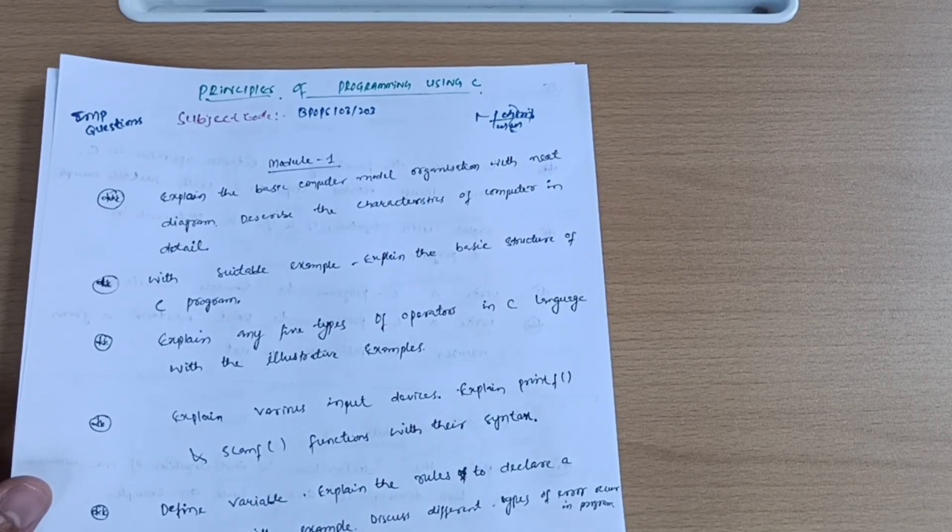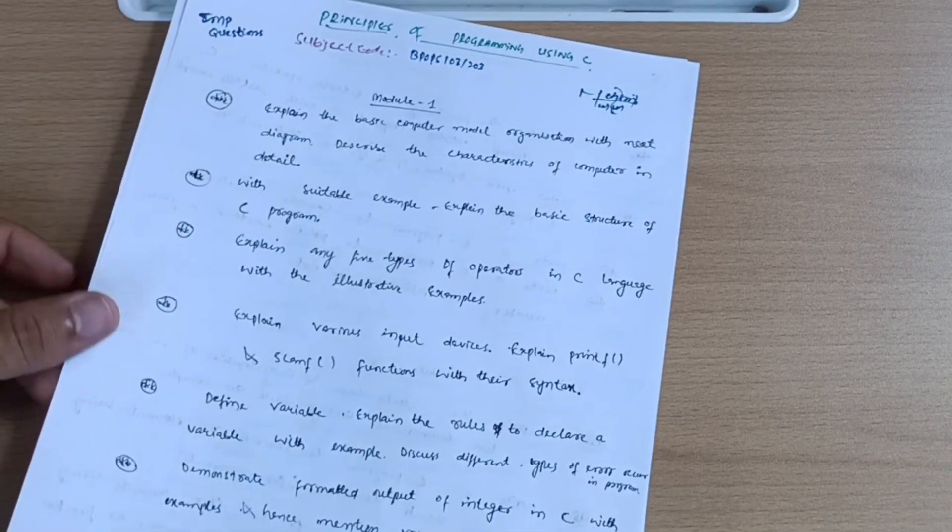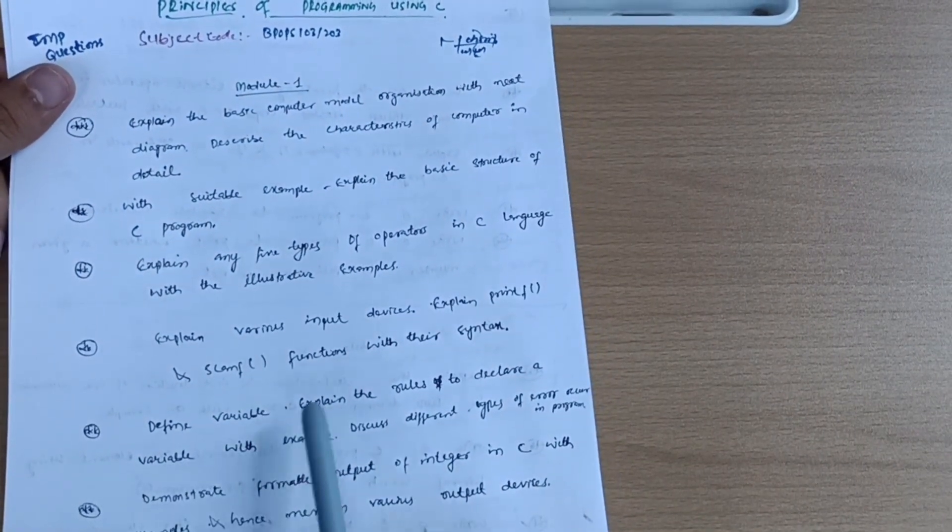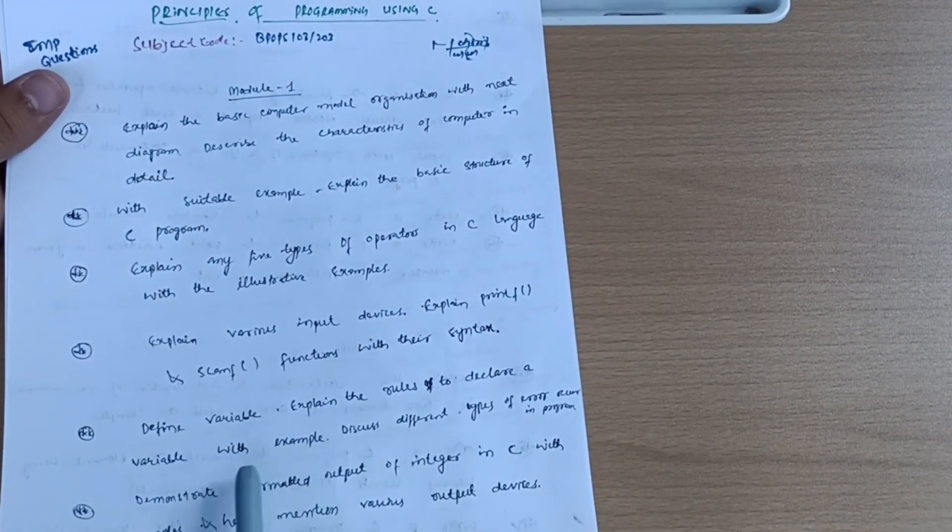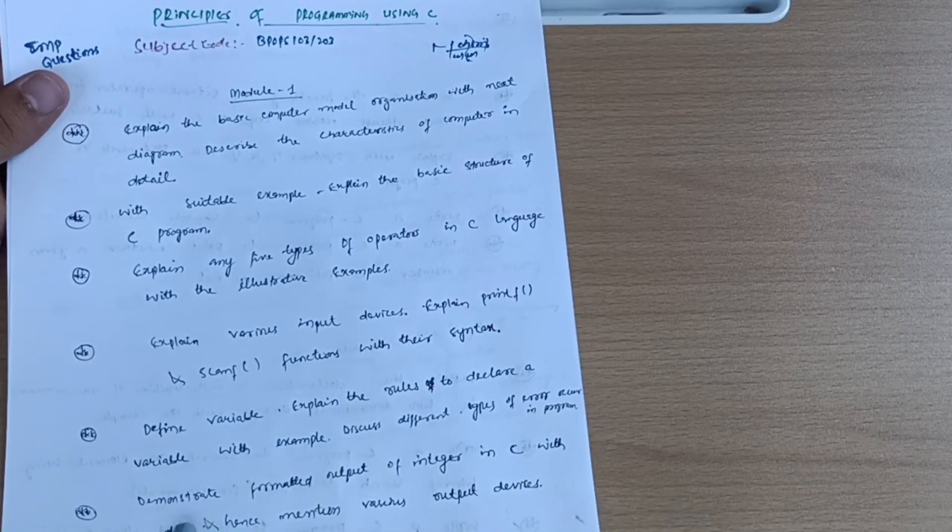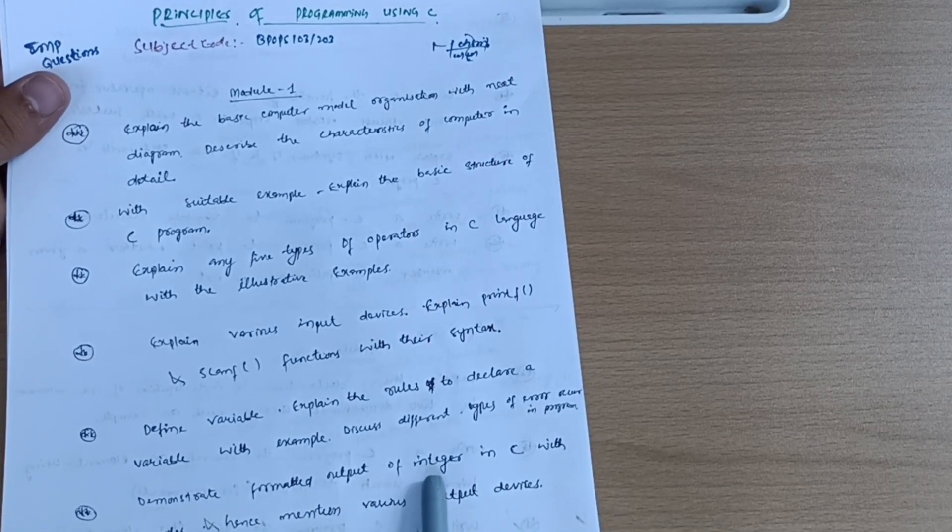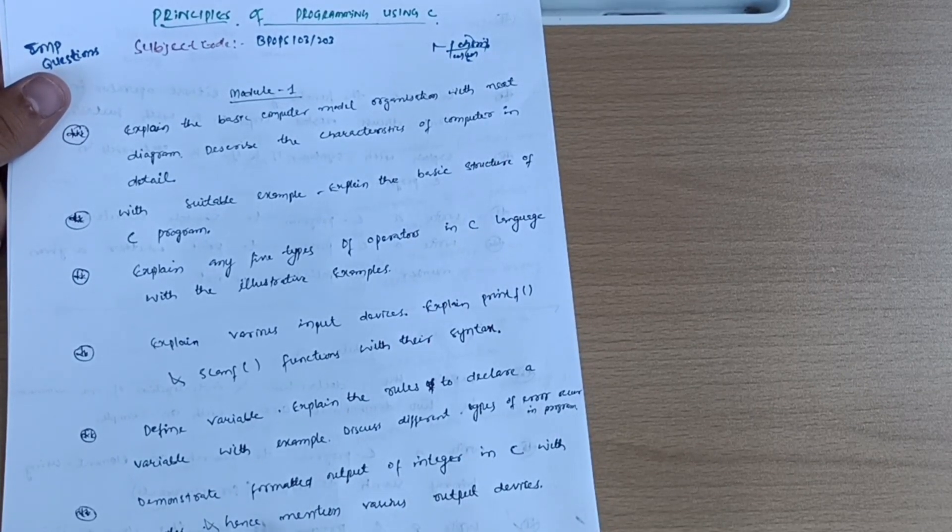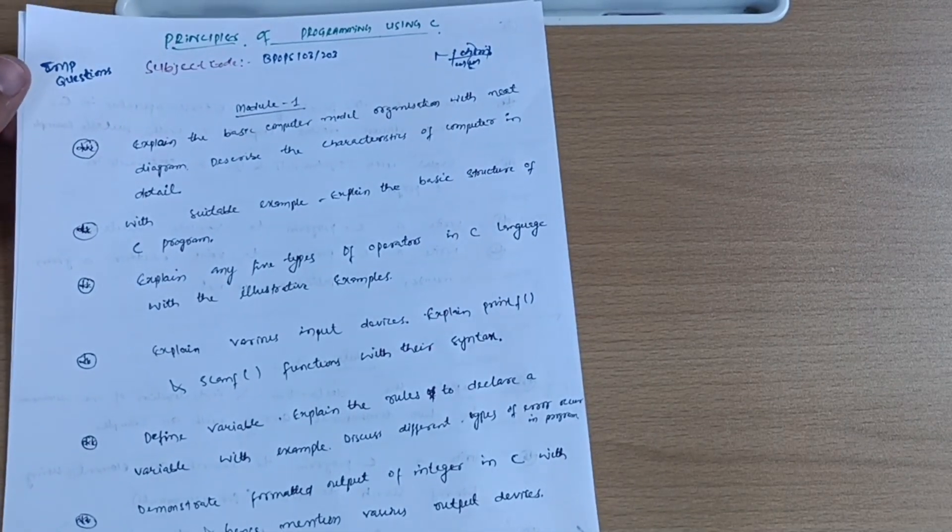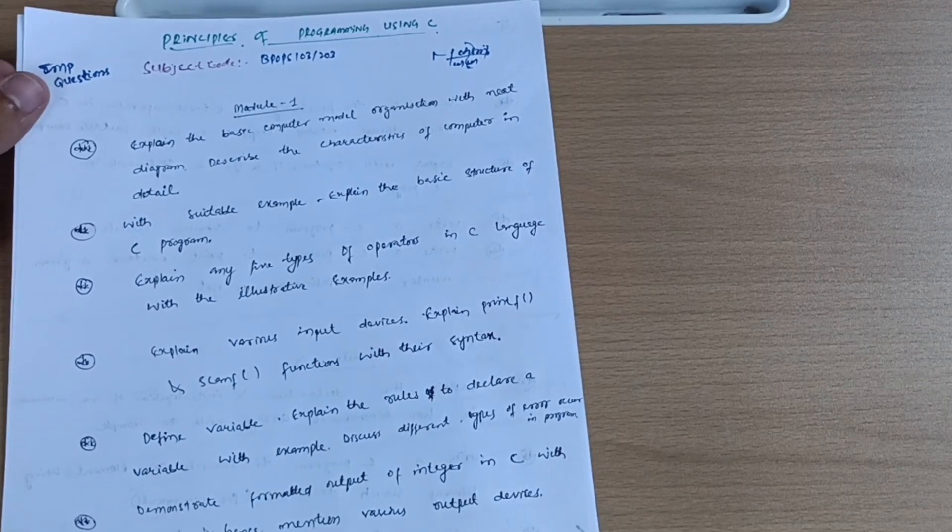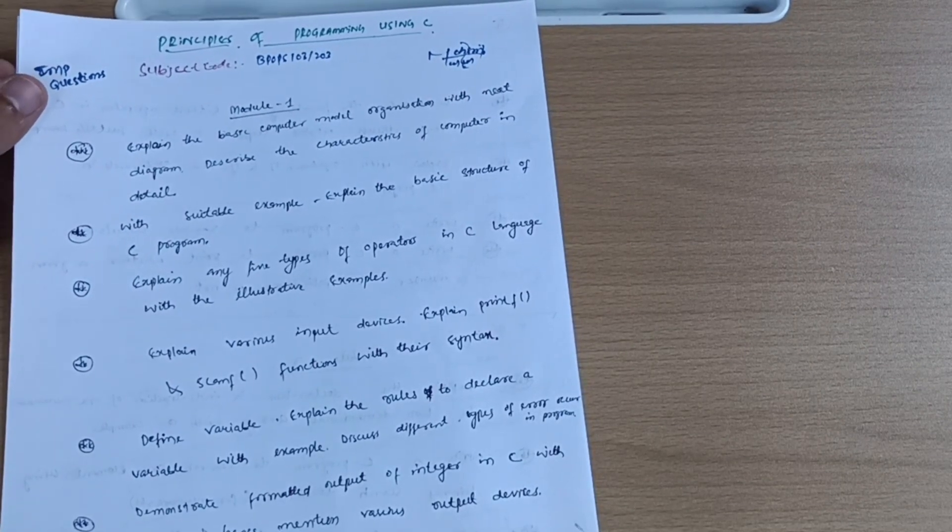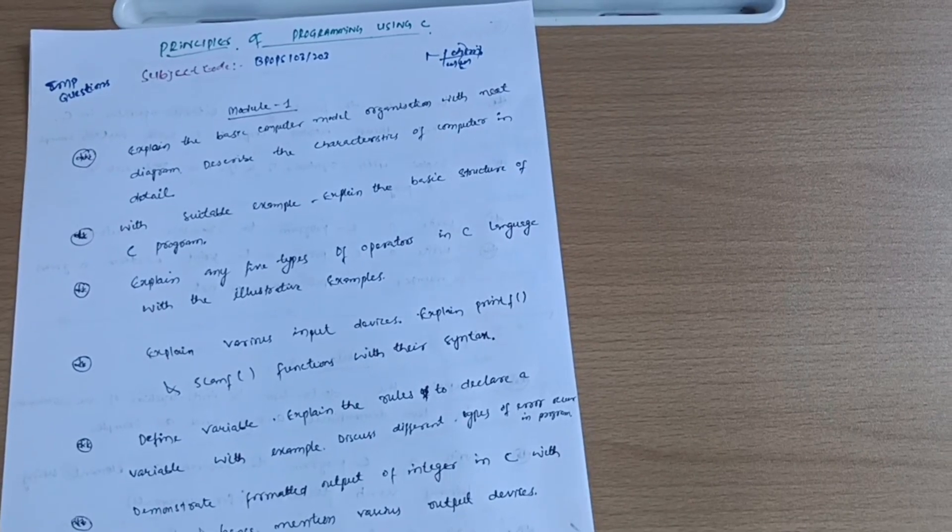Here we have explain various input devices, explain printf and scanf functions with their syntax - it is a basic question which may be asked in the VTU examination. Next is define variable, explain the rules to declare a variable with example, discuss different types of errors that occur in programs, and demonstrate formatted output of integers in C with examples. Also mention various output devices. Here you can score more than 15 marks as it is a theoretical module with no programs at all.